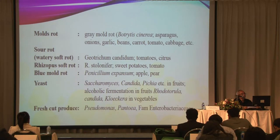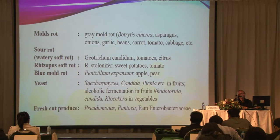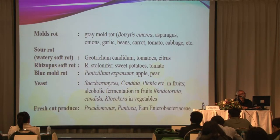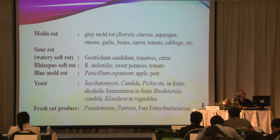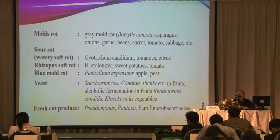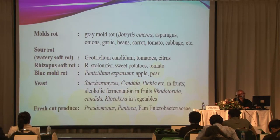Examples of mold rot include gray mold rot caused by Botrytis and similar organisms. Some molds can produce toxins. Examples include Geotrichum candidum, Botrytis, Penicillium expansum, and Candida species which cause alcoholic fermentation in fruits. Rhodotorula can cause discoloration of the product — the red color is produced by Rhodotorula yeast. Cut produce is also contaminated with Pseudomonas, Penicillium, and family Enterobacteriaceae microorganisms.